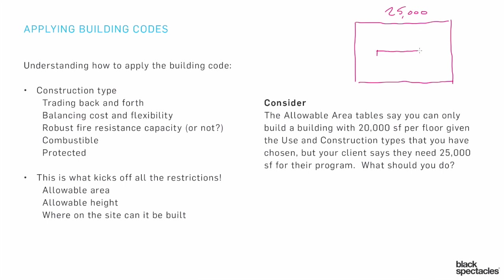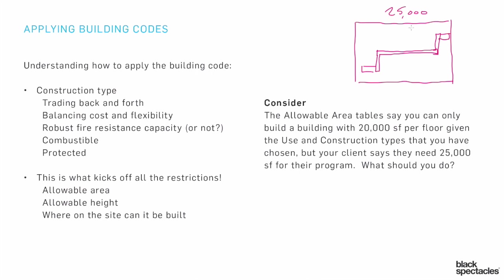What are you going to do? You might have a corridor with some extra bits, and stairs at the ends of those corridors. What you're likely to do is say: if they really need the 25,000 and we can't fit it without changing to another construction type — because you could just change the construction type to get a larger number — but if for some reason that won't work, then you're likely to find a reasonable spot and put in a firewall.